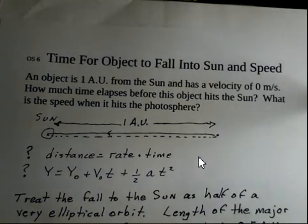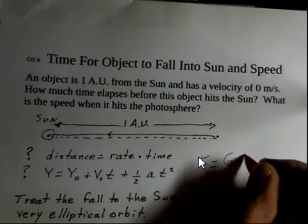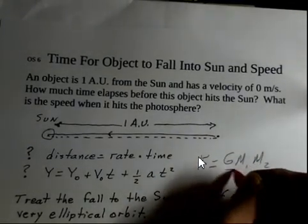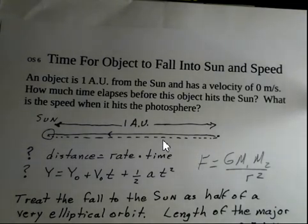If I would write this out here, the force of gravity is capital G, mass of one object, mass of the other object, and divide by R squared, the R value is getting smaller. The force is getting bigger. The acceleration is getting larger. This equation can only be used if the acceleration is constant. So we cannot use either of these two equations. They're illegal for this situation.